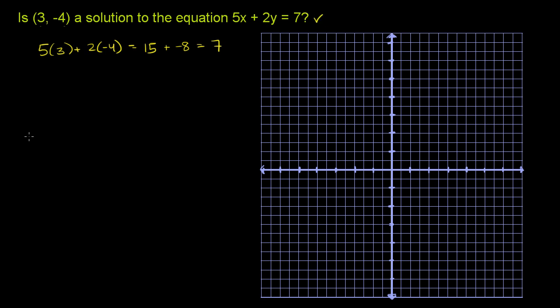Now another way to do it, and I'm not going to go into the details here, is you can actually graph the line. So maybe the line might look something like this. If you have a very good drawing of it, you can see whether the point lies on the line.